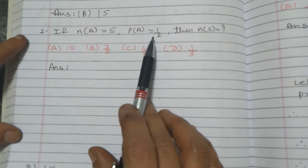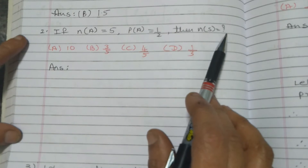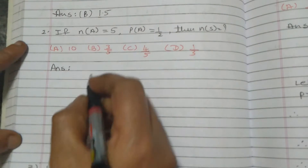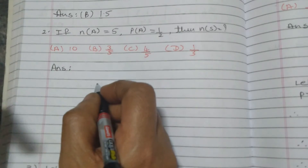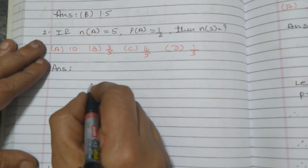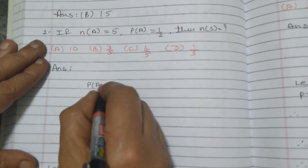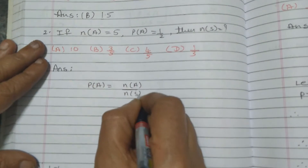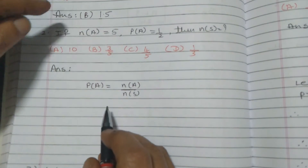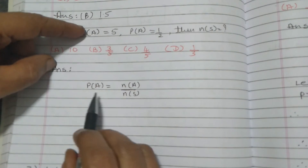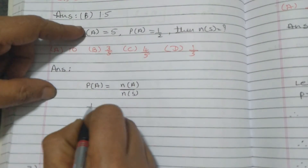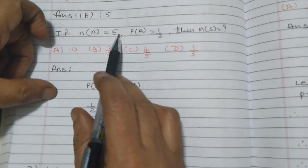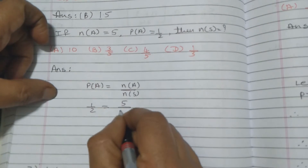Next question: if NA equals 5 and PA equals half, then NS equals what? The formula is PA equals NA upon NS.